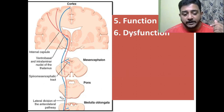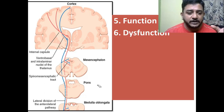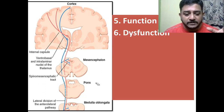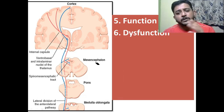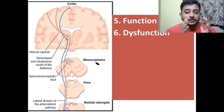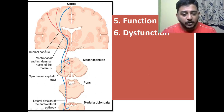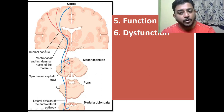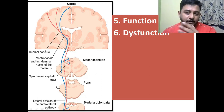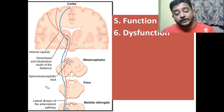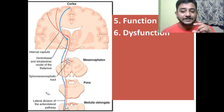What happens in case of dysfunction of this tract? These sensory modalities are obstructed from transmission into consciousness, so the person will lose superficial sensation. Will the sensory loss be on the opposite side or the same side? That depends on the location of the lesion. In case of a lesion in the brain or brainstem, the sensory loss is on the opposite side. Whereas at the spinal cord level, there is also opposite side sensory loss, but on the same side a small portion of sensation is also compromised.